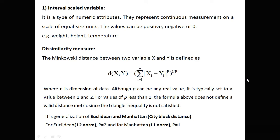First, interval scale variables. This is a type of numeric attribute. They represent continuous measurements on a scale of equal-size units. The values can be positive, negative, or zero. Examples of interval scale variables are weight, height, and temperature.